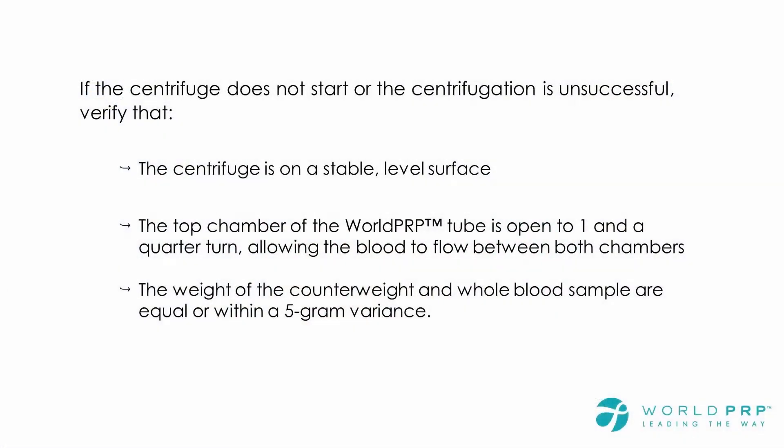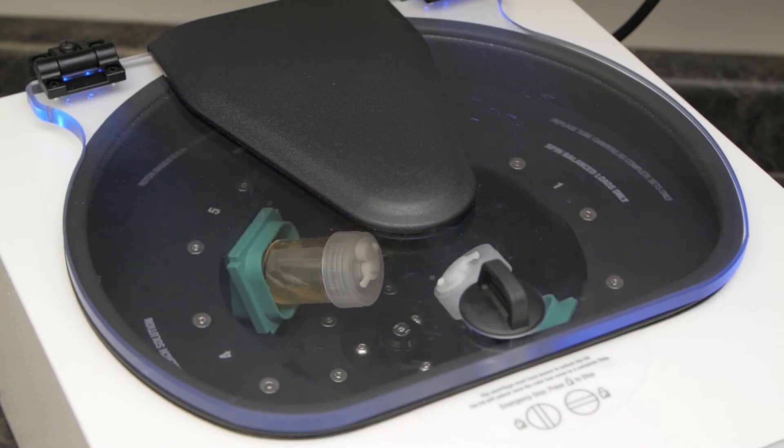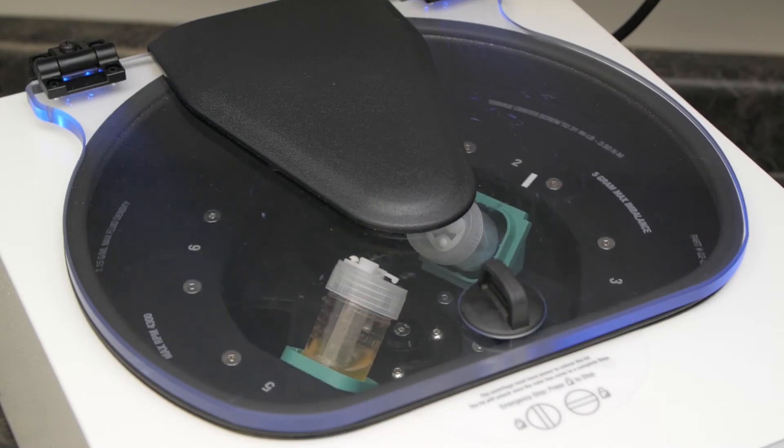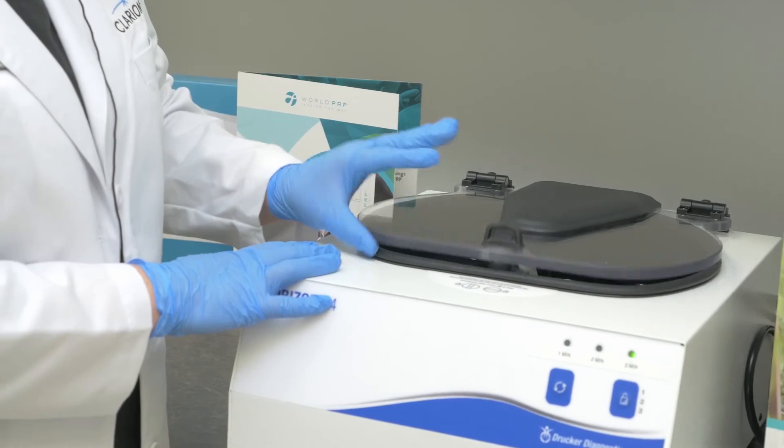If the centrifuge spin cycle is incomplete verify that: 1, the centrifuge is on a stable level surface. 2, the top chamber of the World PRP tube is open to one and a quarter turns allowing the blood to flow between both chambers. 3, the weight of the counterweight and whole blood sample are equal within a 5 gram variance. Once the cycle has stopped unlock the lid and slowly remove the World PRP tube.